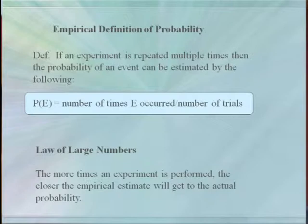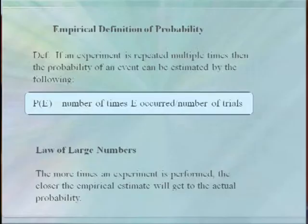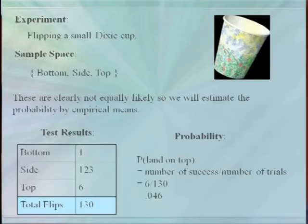If an experiment is repeated multiple times, then the probability of event E can be estimated by the number of times that E occurs divided by the number of trials or experiments. This formula does not require equally likely outcomes, as in a previous one, and is in fact the method we use most often for estimating probabilities in the real world. There is a property in probability known as the law of large numbers, which states that the more times the experiment is performed, the closer your empirical estimate will get to the actual probability. While this may sound intuitively obvious, it is in fact quite difficult to prove.